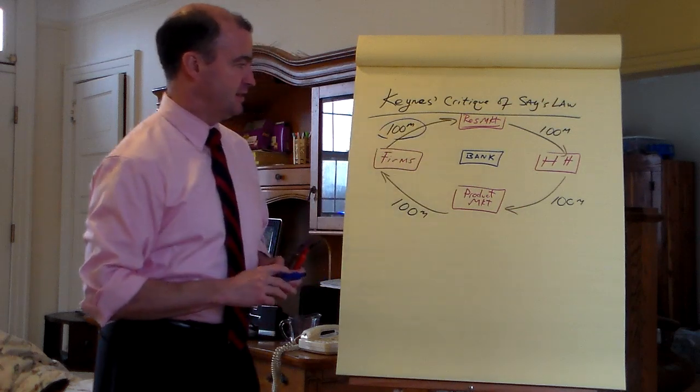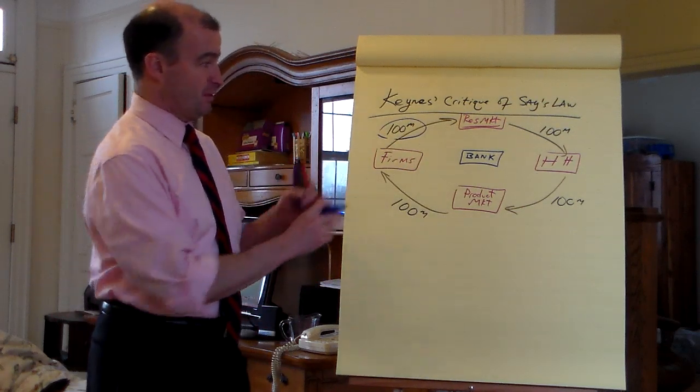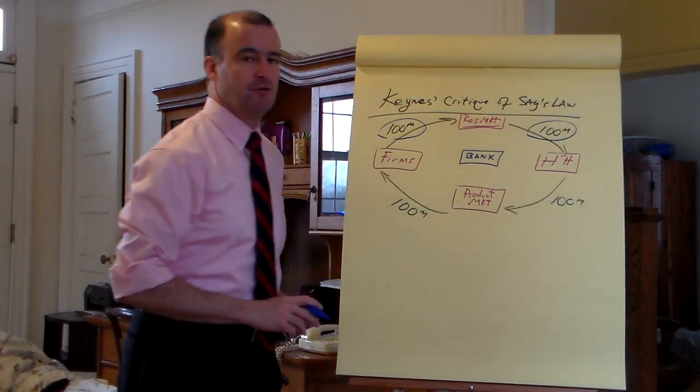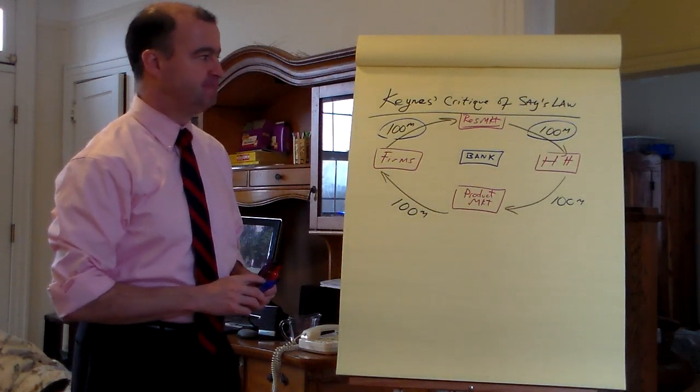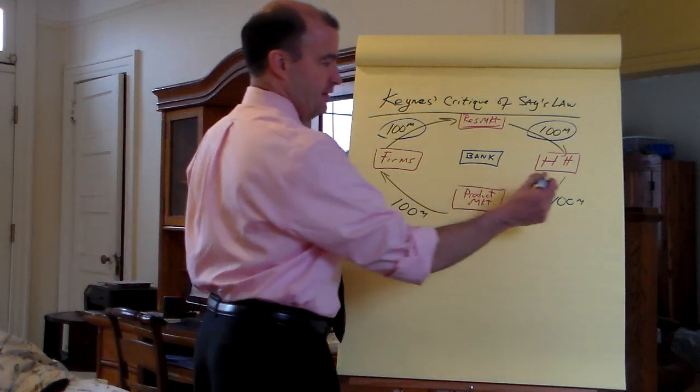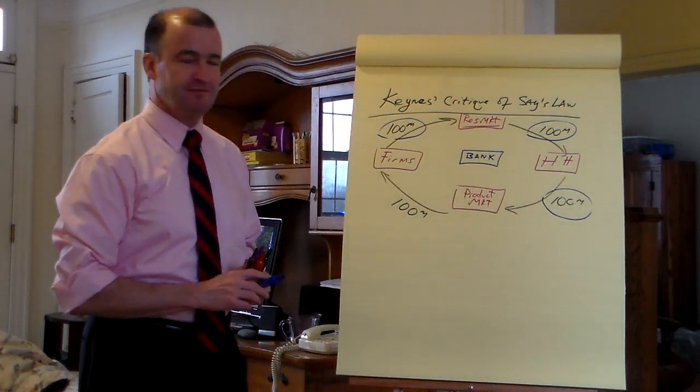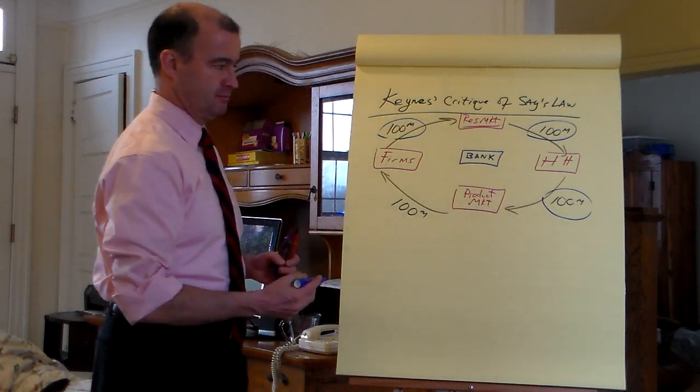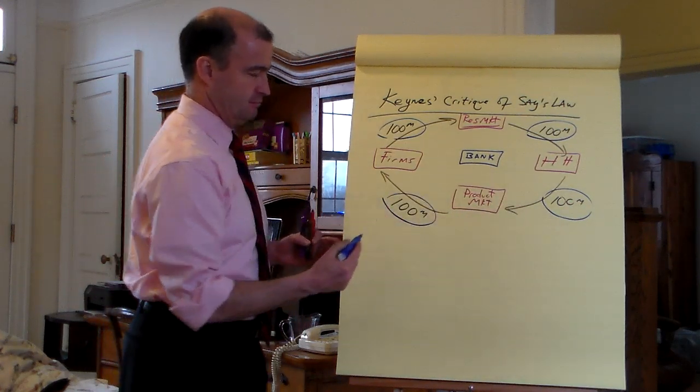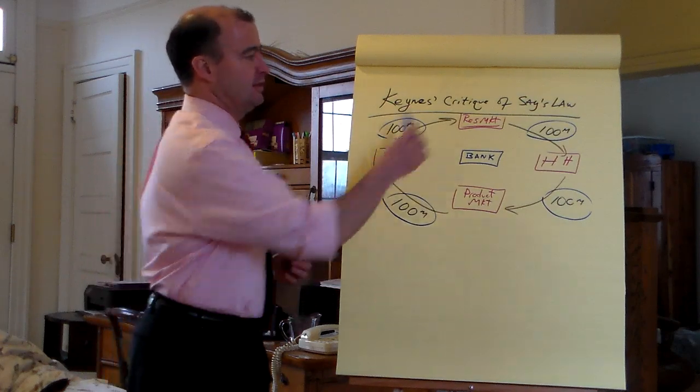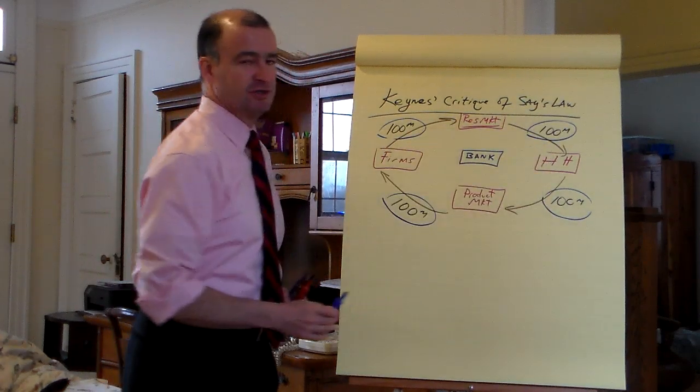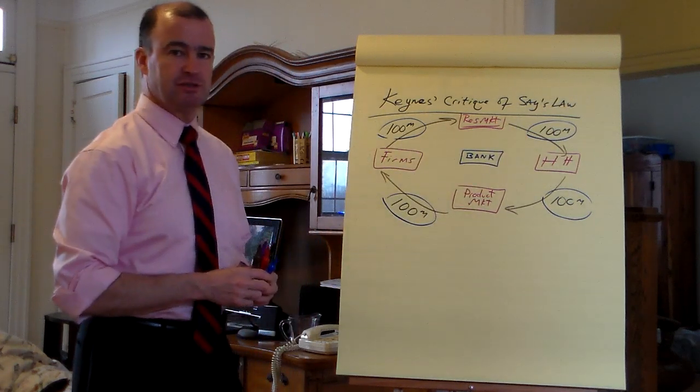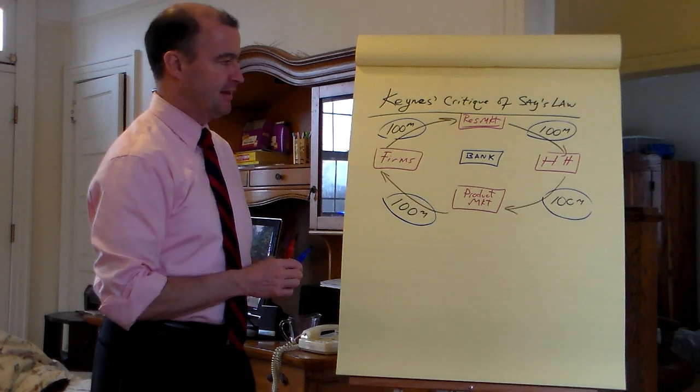Say these incomes here, well it's really wage costs there. Wage costs are $100 million, and wage incomes are $100 million. That potentially can create enough income to purchase all the output. Yes it does, and it generates a revenue of $100 million.